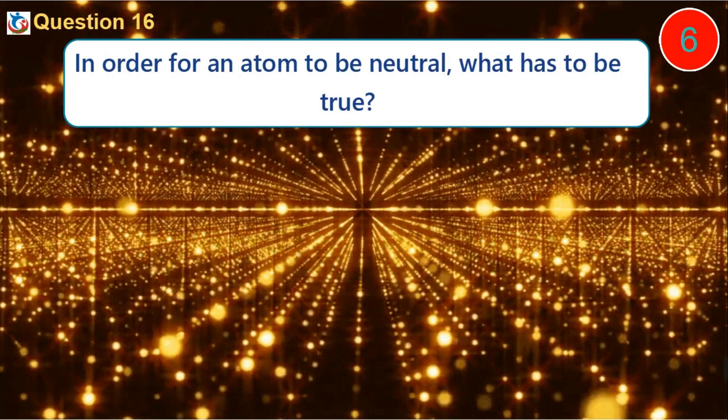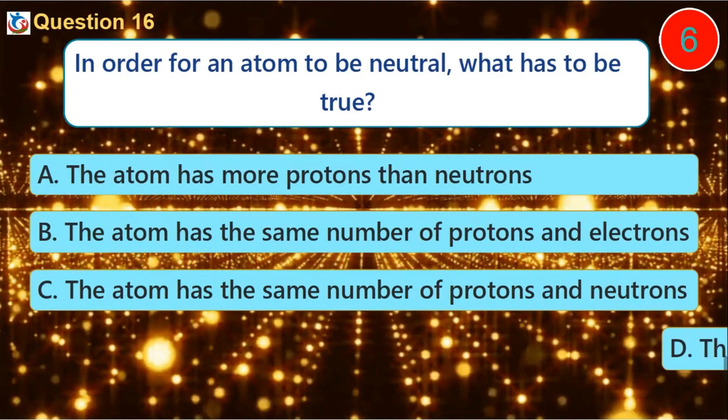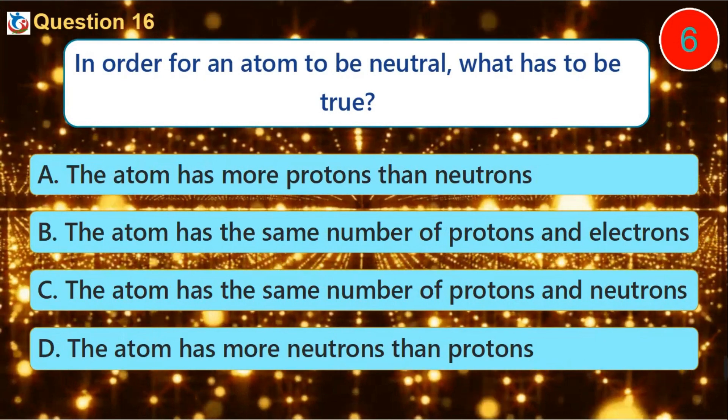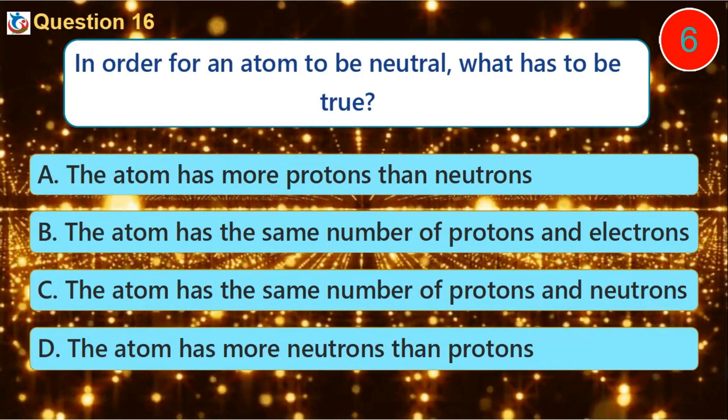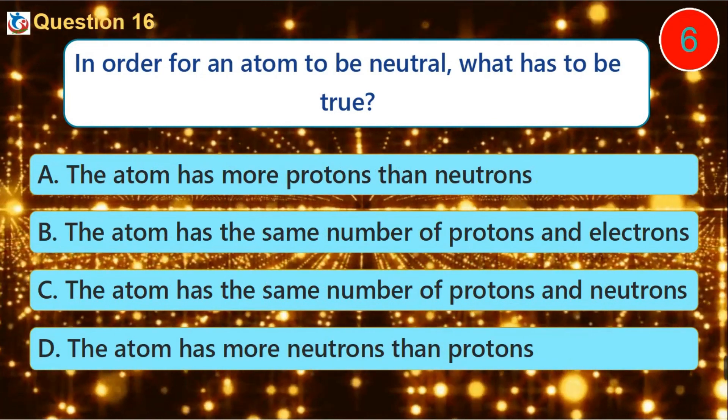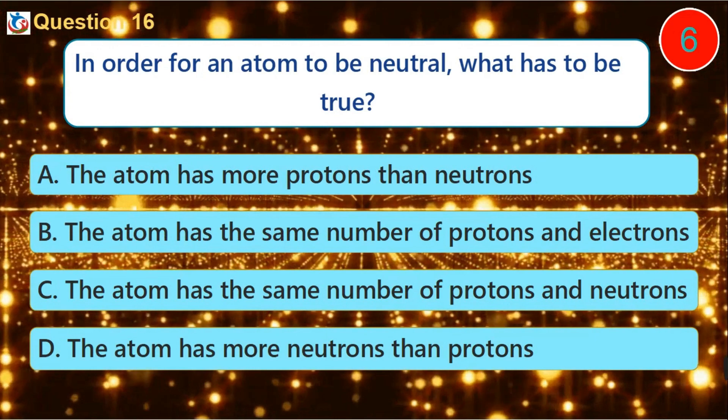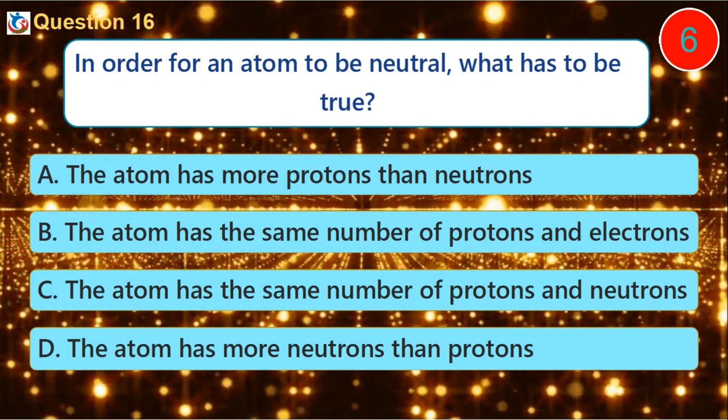Question 16. In order for an atom to be neutral, what has to be true? A. The atom has more protons than neutrons B. The atom has the same number of protons and electrons C. The atom has the same number of protons and neutrons D. The atom has more neutrons than protons.